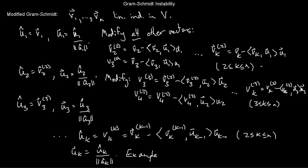Now that we've seen the rundown of these two processes, I want to point out that if you do this in exact arithmetic, both of these will give you the exact same orthonormal basis — there will not be any difference. The difference, the numerical stability in the modified Gram-Schmidt process, comes from taking into account machine error.